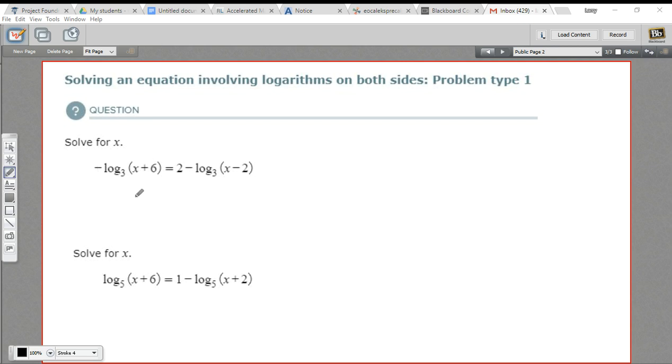Let's look at how this works in this first one. I have -log₃(x+6) = 2 - log₃(x-2). What I can do is move this over here by adding log₃(x-2) to both sides of the equation. So I'm adding it here. I'm also going to add it here.